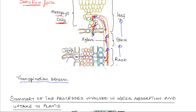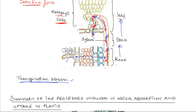It is important to note that the transpiration stream is not the same as the transpiration pull. The transpiration pull is a suction force that pulls water up from the roots to the evaporating surfaces, while the transpiration stream is the continuous flow of water from the roots up the stem to the evaporating surface. In other words, transpiration stream is a flow, whereas transpiration pull is a force. The transpiration pull creates and maintains the transpiration stream.